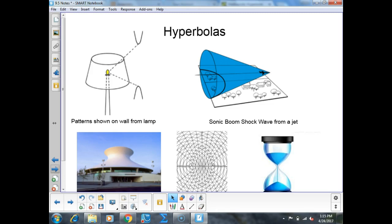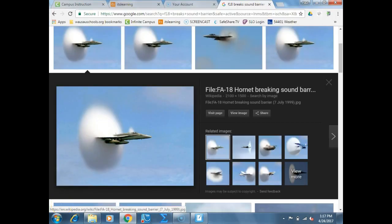The sonic boom shockwave from a jet is in the form of a hyperbola, or at least half of the hyperbola. You get a little bit in front of the jet, but the jet's traveling faster than the speed of sound. The cloud actually is also a hyperbola. Both sides are, it's pretty sweet.